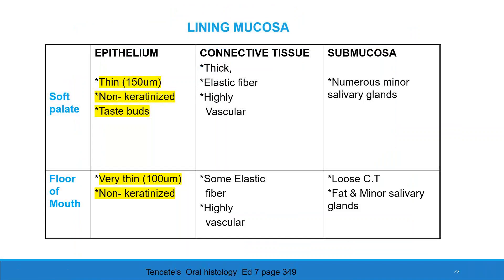Lining mucosa. The soft palate has thin non-keratinized epithelium and contains taste buds. Its connective tissue is highly vascular, contains elastic fibers, and minor salivary glands are present in the submucosa. The epithelium covering the floor of the mouth is very thin and non-keratinized. Connective tissue is highly vascular, contains elastic fibers, and submucosa contains fat and minor salivary glands.